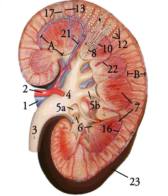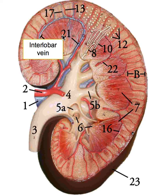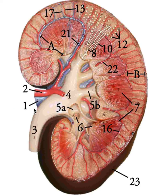Beyond the cortical radiate arteries, the pathway continues microscopically into the afferent and efferent arterioles and the vasa recta, which aren't visible at this scale. On this model the arterial pathway ends with the cortical radiate arteries. For venous flow, the pathway is essentially the same in reverse, except there is no segmental vein — you go directly from the interlobar vein into the renal vein. That's the key difference: no segmental vein on the venous side.